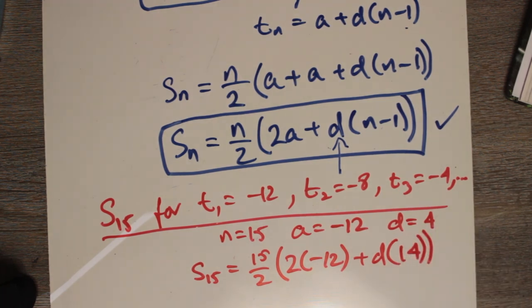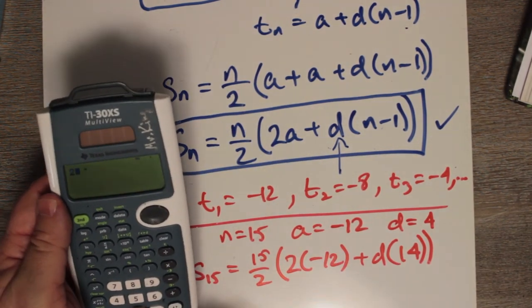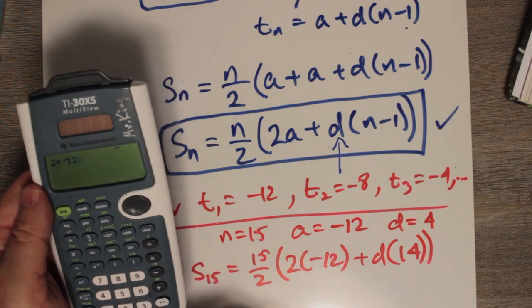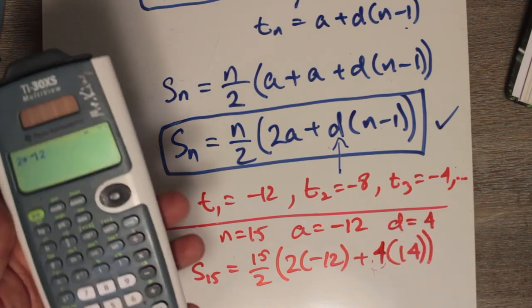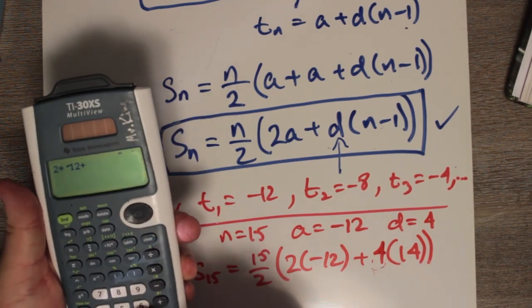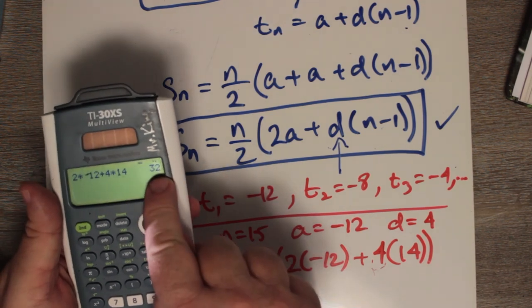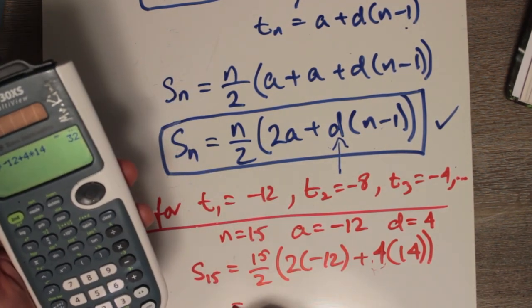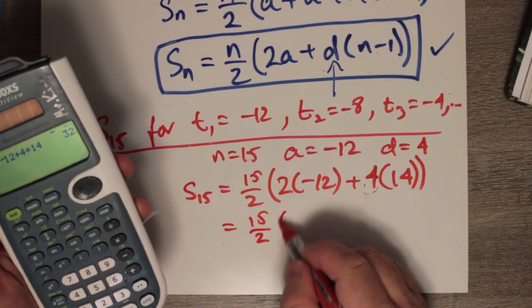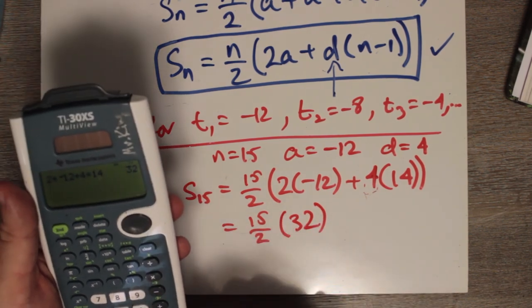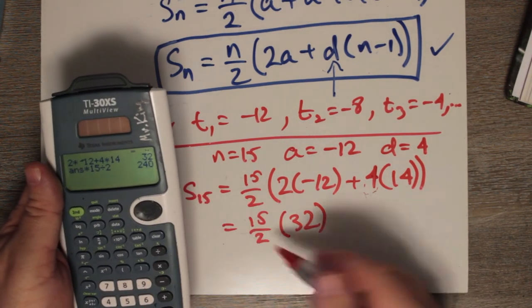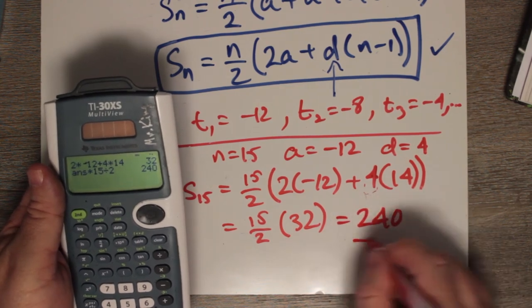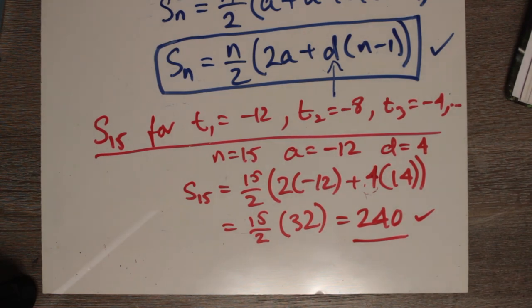Now let's work out what's in the brackets. 2 times -12 plus d (which was 4) times 14. So we're adding 4 times 14, and we get 32. This becomes 15/2 times 32, which is like 15 times 16, and 15 times 16 gives us 240, which checks out with the textbook. This question was example 2 on pages 397 to 398.